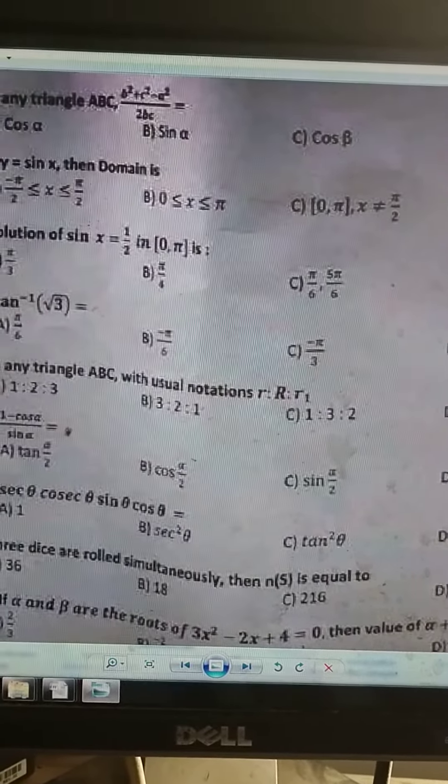Tan inverse root 3, this is 60 degree or π by 3. Now this is solid.